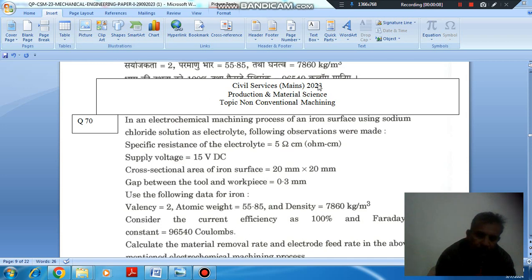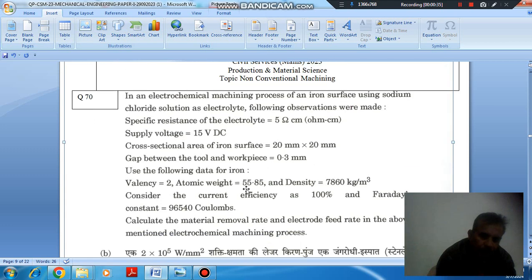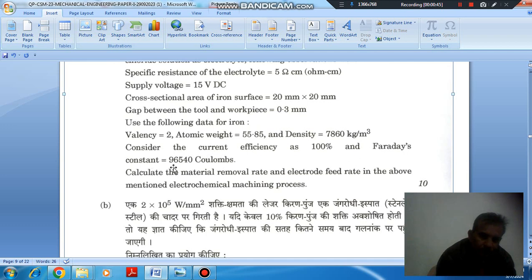Question number 70 from Civil Service Main 2020: In an electrochemical machining process of an iron surface using sodium chloride solution as electrolyte, following observations were made. Specific resistance of electrolyte is 5 ohm-cm. Supply voltage is 15V DC. Cross-sectional area of iron surface is 20 mm by 20 mm. Gap between tool and workpiece is 0.3 mm. Use the following data for iron: atomic weight is 55.85 and density is 7860 kg per meter cube. Consider the current efficiency as 100% and Faraday constant is 96540 coulombs. Calculate the metal removal rate and electrode feed rate in the above mentioned electrochemical machining process.